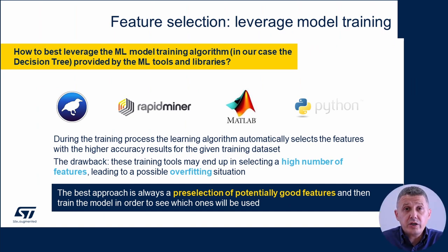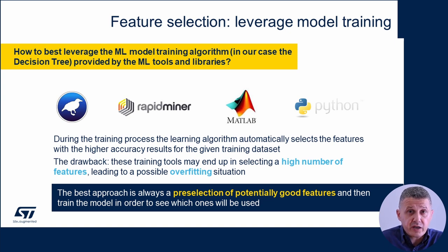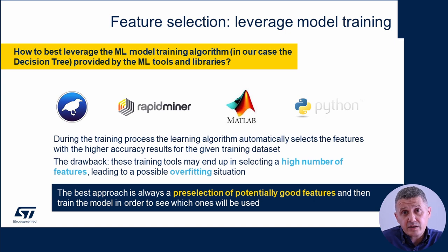Major machine learning tools and libraries like RapidMiner, Weka, Matlab, and Python also automatically select the most informative features using specific training algorithms. In any case, it's usually better to manually pre-select the most informative features beforehand, as we have seen.